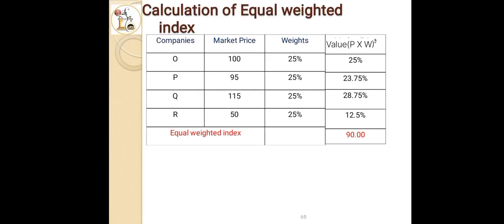For first company O: 100 × 25% = 25. Similarly for P: 95 × 25% = 23.75. For Q: 115 × 25% = 28.75. For R: 50 × 25% = 12.5.